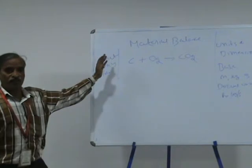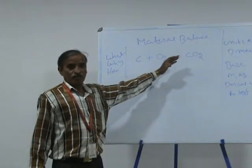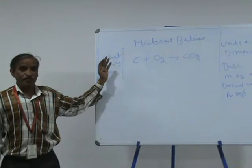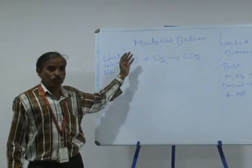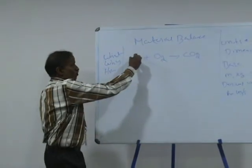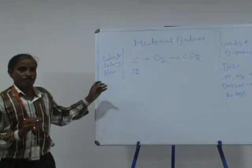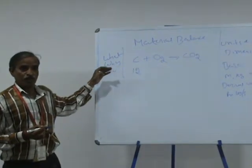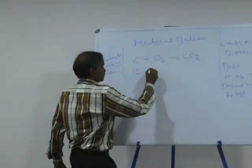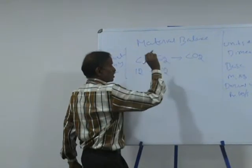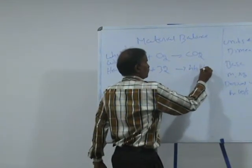Here, one mole of carbon reacts with one mole of oxygen to give one mole of carbon dioxide. But in actual practice, in an industry, materials are handled in terms of kilograms. So we have to convert these moles into kilograms by multiplying the moles with molecular weight. The molecular weight of carbon is 12, so one mole of carbon implies 12 kg of carbon, plus 32 kg of oxygen will give 44 kg of carbon dioxide.